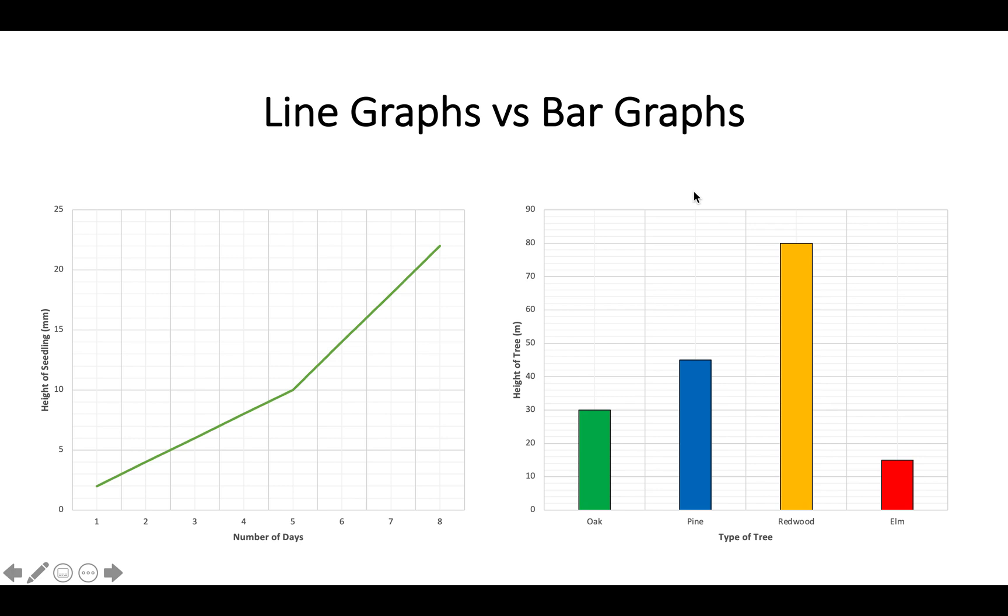On the left here we have number of days going along the bottom and the height of a seedling going up the side. Whenever we are using two sets of numbers, when your data set contains two categories of numbers, this is where we use a line graph. For example, it could be time going across or temperature, and what you measure goes up the side. In biology, it's important to remember that we join the dots using a ruler to draw a line between each dot. Don't try to do a curve or a line of best fit.